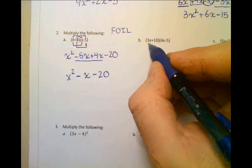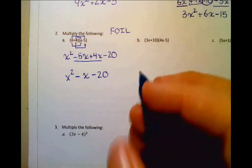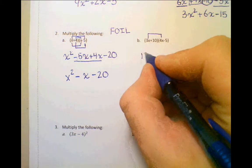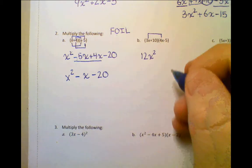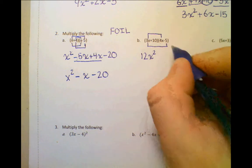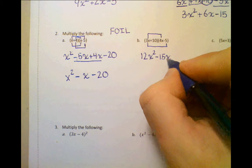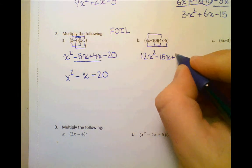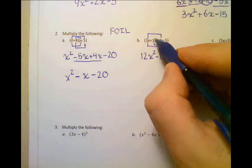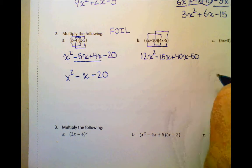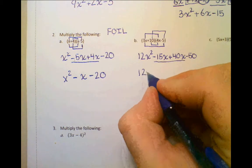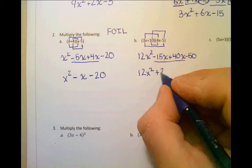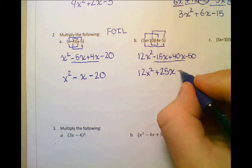The next problem: we have 3x plus 10 times 4x minus 5. Do the First: 3x times 4x gives us 12x squared. The Outer: 3x times negative 5 gives us negative 15x. The Inner: 10 times 4x gives us positive 40x. And the Last: 10 times negative 5 is negative 50. Combining the middle terms: negative 15 plus 40 gives us positive 25x. So the answer is 12x squared plus 25x minus 50.